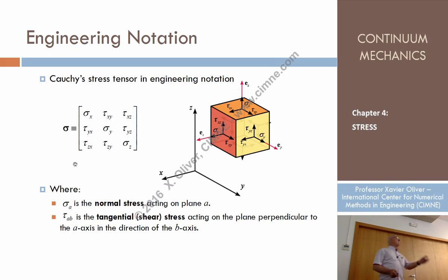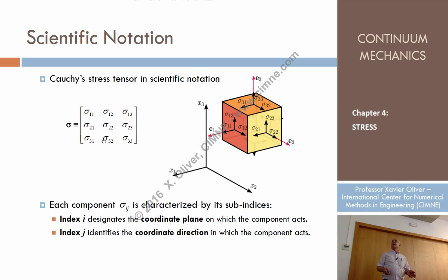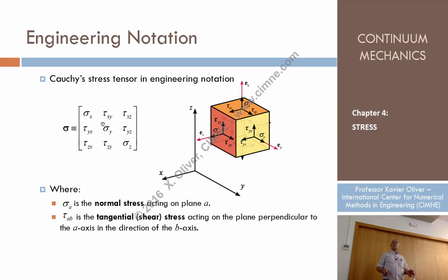When we do mathematical operations, sometimes using indicial notation is easier for us, because this is appropriated to that, using that notation. But whenever we work on physical interpretations, we use the engineering notation, which is that one, which is the one that now you should fully recognize: sigma and tau.